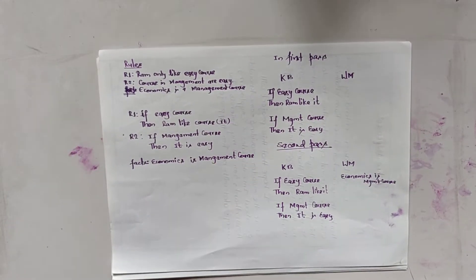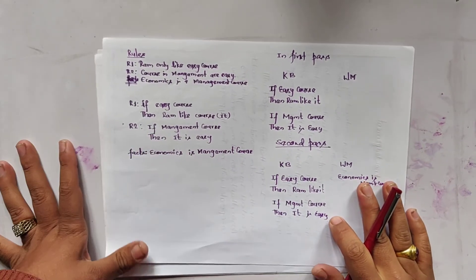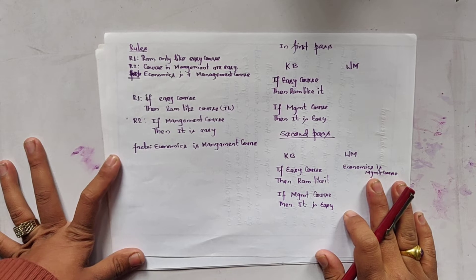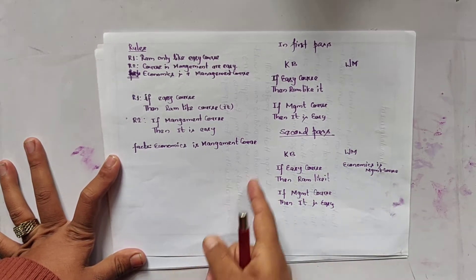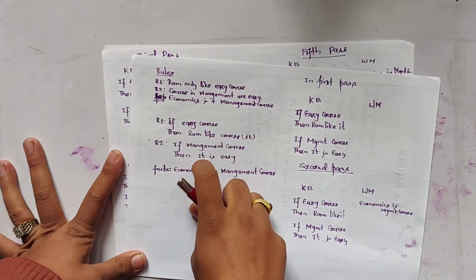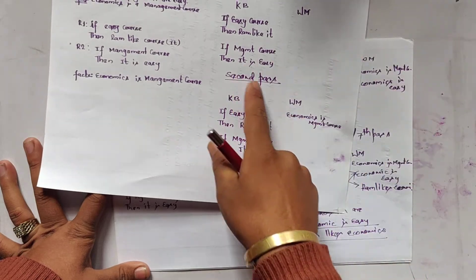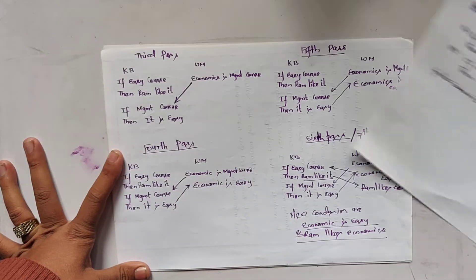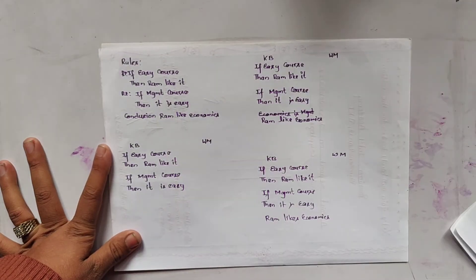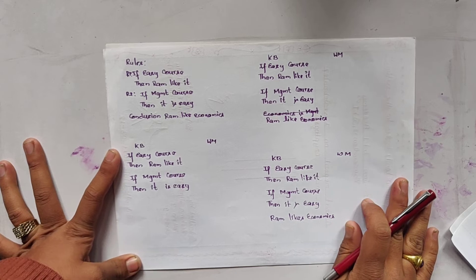Namaste. In this video we are going to use backward chaining, that is the inference mechanism used in expert systems. In the previous video I solved this problem using forward chaining. Now let us solve this same problem by using backward chaining.